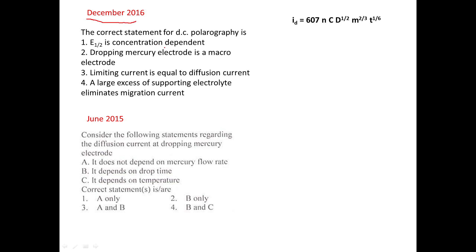I'll discuss each option. Most questions are asked from the Ilkovic equation, where ID is the diffusion current, equal to 607 times N, where N is the number of electrons getting reduced, C is the concentration, D is the diffusion coefficient, M is the mass of mercury flowing per second, and T is the time of each drop. This is the Ilkovic equation, which I have already discussed.